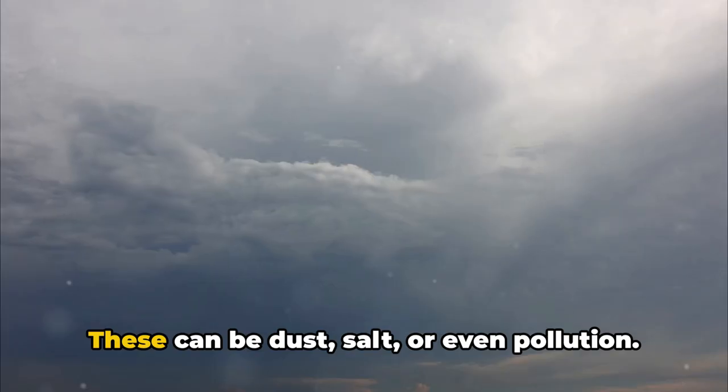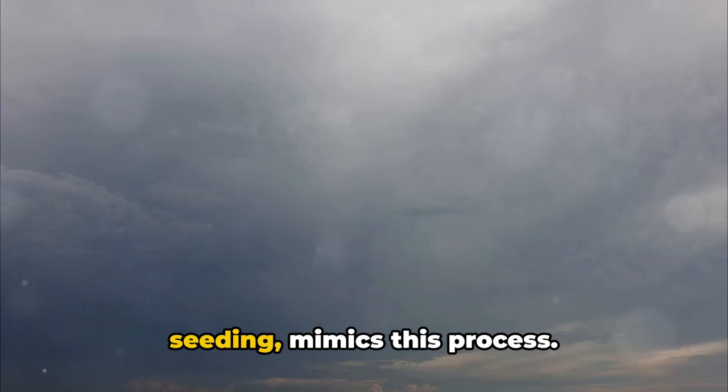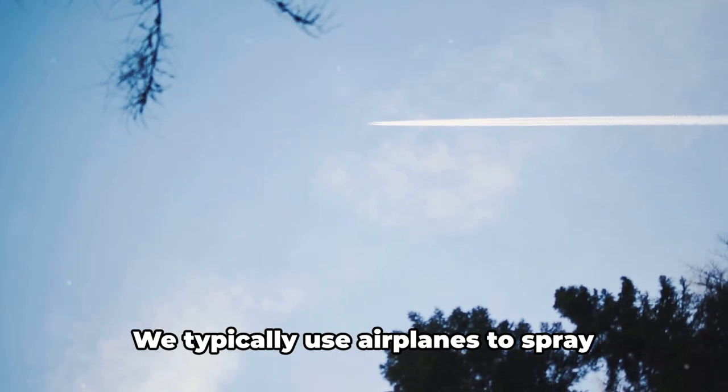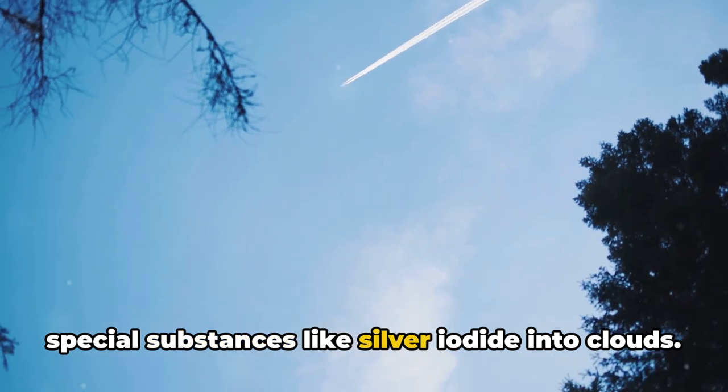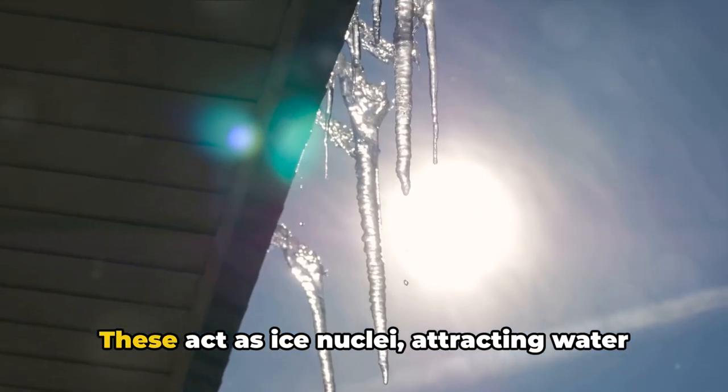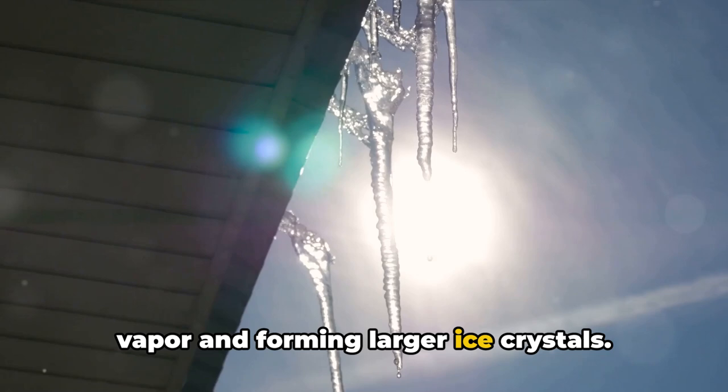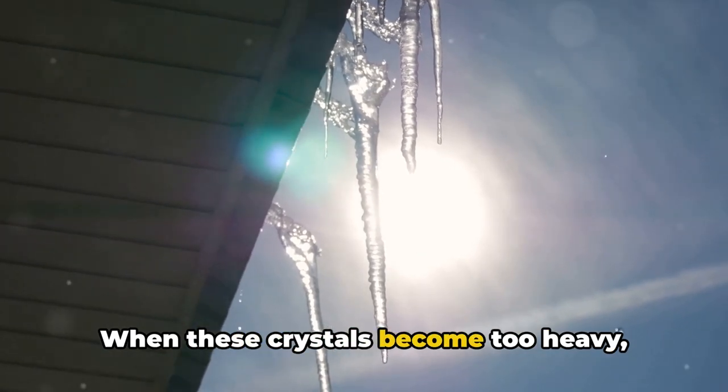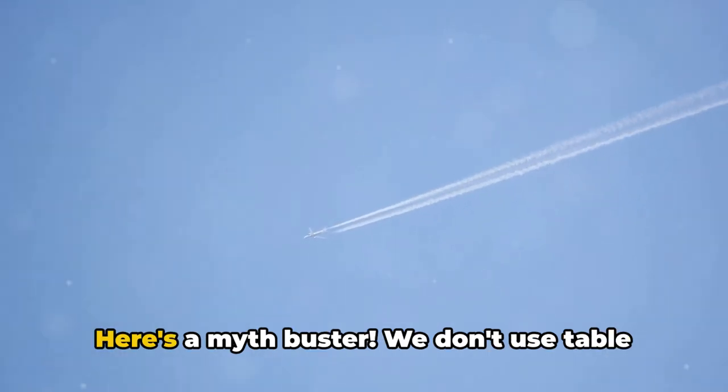Artificial rain, also known as cloud seeding, mimics this process. We typically use airplanes to spray special substances like silver iodide into clouds. These act as ice nuclei, attracting water vapor and forming larger ice crystals. When these crystals become too heavy, they collide and melt, falling as rain.